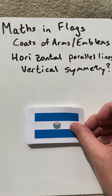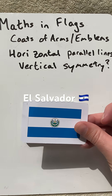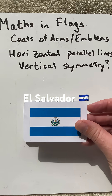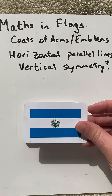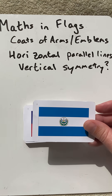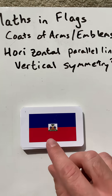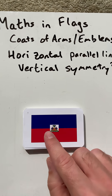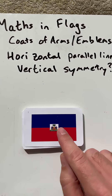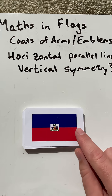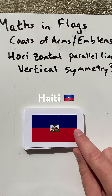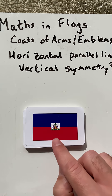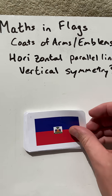Starting off with El Salvador, but it has words in its coat of arms, so there's no vertical symmetry. Haiti has a coat of arms in the centre across that horizontal parallel line, but it still has vertical symmetry.